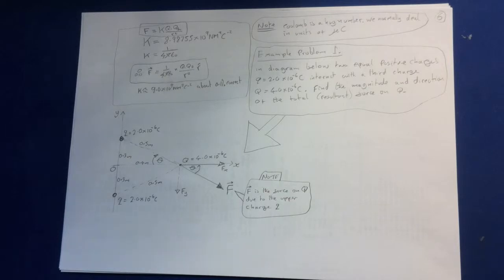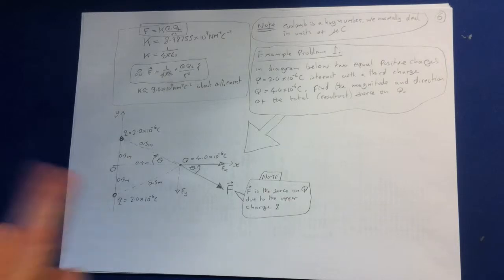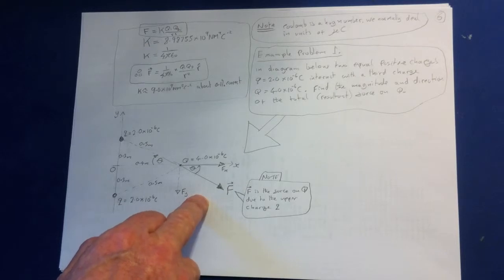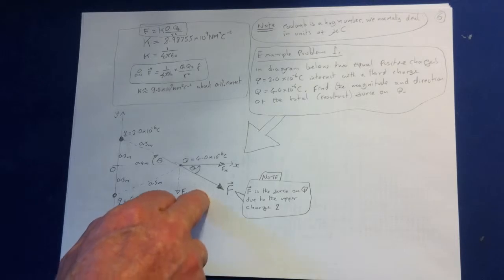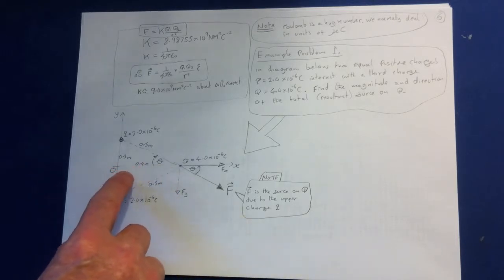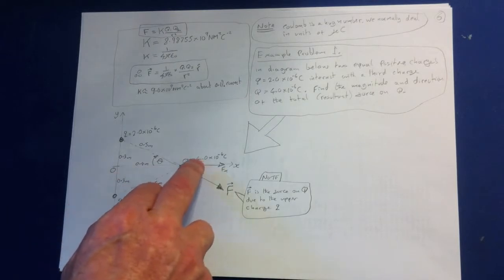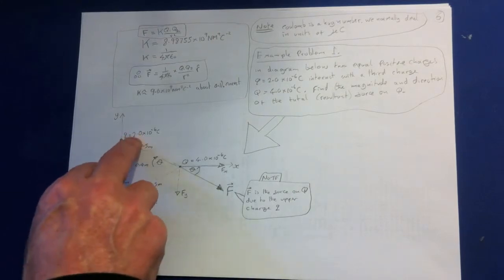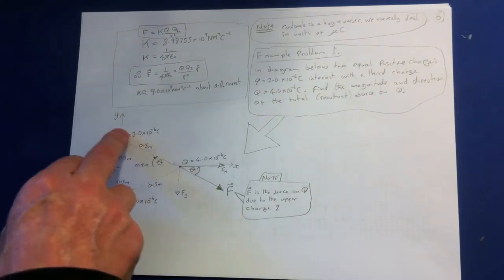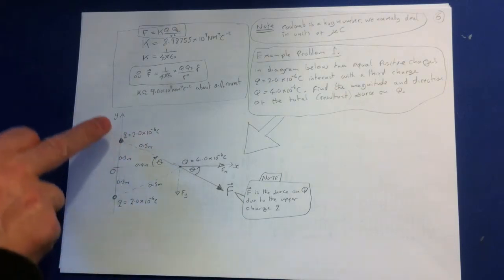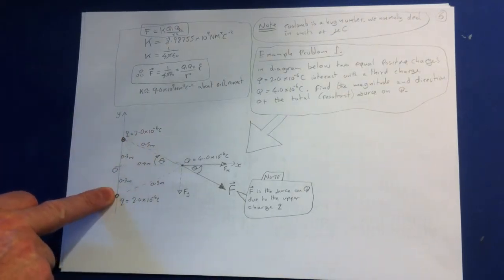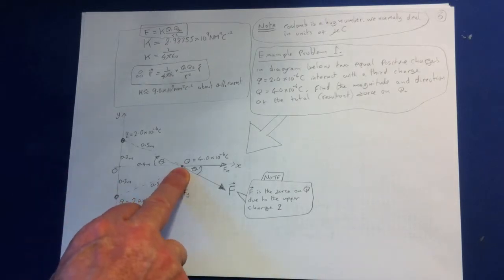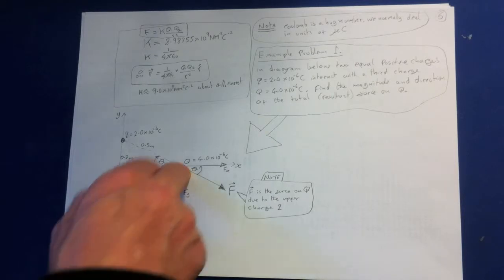So now I'm going to just give you a quick example problem here. In this diagram, two equal positive charges Q, this Q here is, no they're equal. So the Q here, these two charges are equal, and it's two times ten to the minus six. Now this question says, in a diagram, these two charges, which are equal charges two times ten to the minus six, interact with a third charge, this one here. We want to find the magnitude.